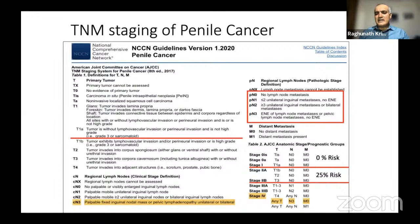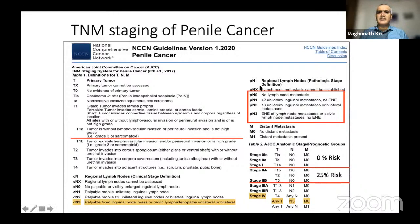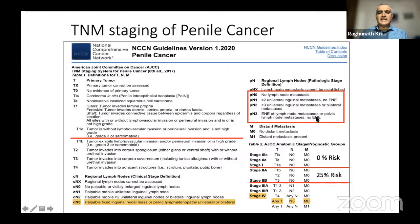To refresh your memory on pathological N staging: pN0 is no lymph node metastasis. pN1 is involvement of two or fewer unilateral inguinal lymph nodes without extranodal extension. pN2 is three or more lymph nodes, either unilateral or bilateral. pN3 is extranodal extension of lymph node metastasis, or pelvic lymph node metastasis — even without extranodal extension — which is also considered pathological N3 disease. Clinical N3 means palpable fixed inguinal nodal mass or pelvic lymphadenopathy, either unilateral or bilateral.